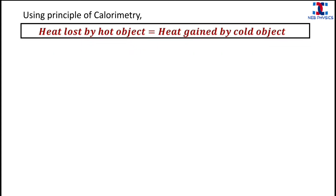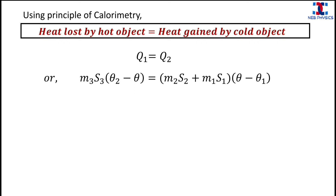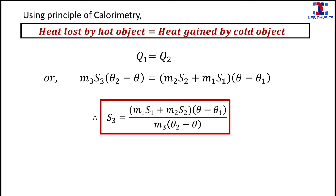Finally, we apply the principle of calorimetry: heat lost by the hot object equals heat gained by the cold objects, that is q1 equals q2. Substituting their values and solving, we get the expression for S3. Since we know all the quantities on the right-hand side, we can easily calculate S3, which is the specific heat capacity of the given solid.